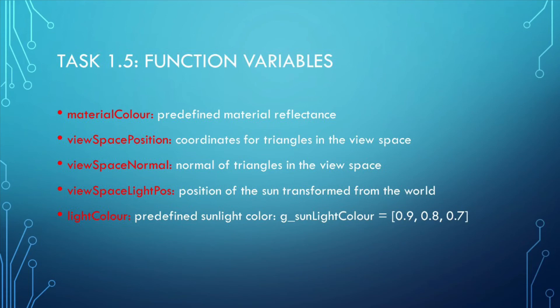Material color is a predefined material reflectance that determines how a material reflects light. View space position represents the coordinates for triangles in the view space. View space normal represents the normal of triangles in the view space. View space light position represents the position of the sun transformed from the world position of the sun. Light color represents the predefined sunlight color: g_sunlight_color equals (0.9, 0.8, 0.7).